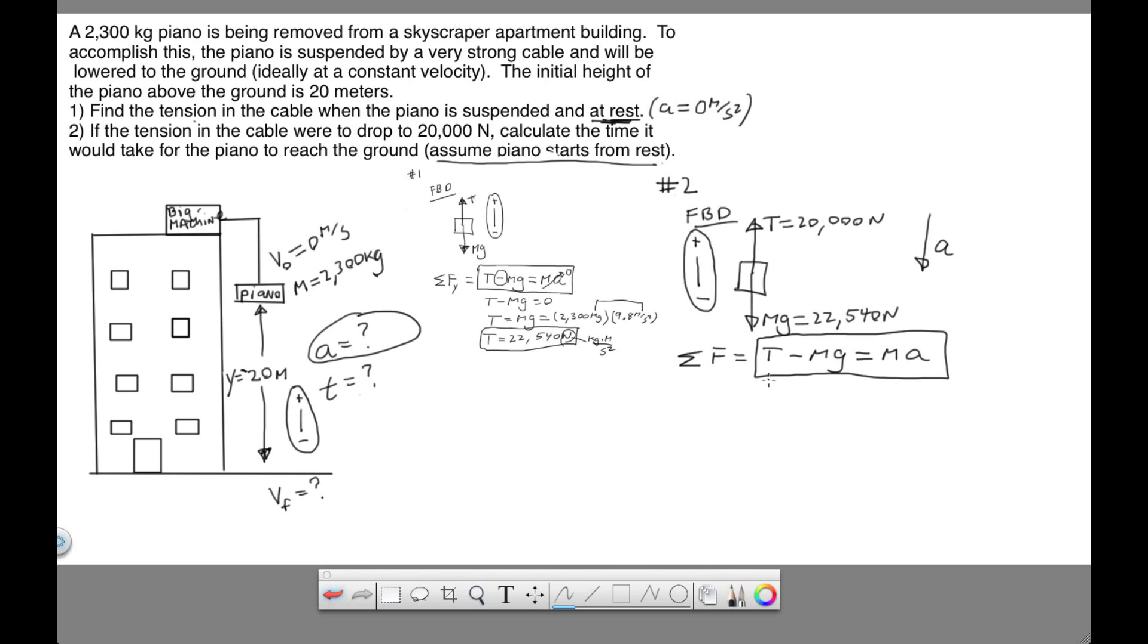So to find the acceleration, we take this equation, rearrange it. a is going to be equal to T minus mg over m. And now we plug numbers in.